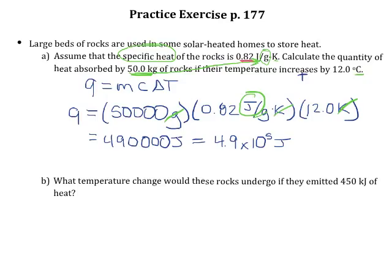Next question. What would the temperature change be if they emitted 450 kilojoules of heat? So similar idea, we're still going to use this equation, Q equals MC delta T, but now they're asking us about the temperature change, so we're going to rearrange this to solve for the change in temperature. So rearranging this equation, we know that delta T is equal to Q over M times C.